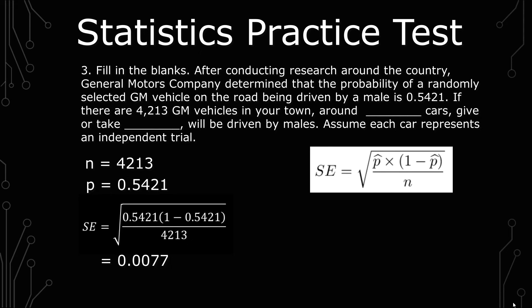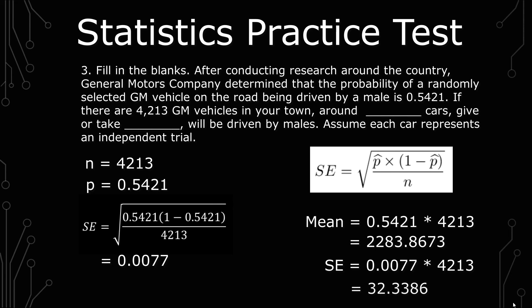The next step is to take those estimates and multiply them against the n, which is 4,213. So for the mean, you multiply 0.5421 times 4,213 to give you 2,283.8673. And for the standard error, you take 0.0077 times 4,213 to give you 32.3386.